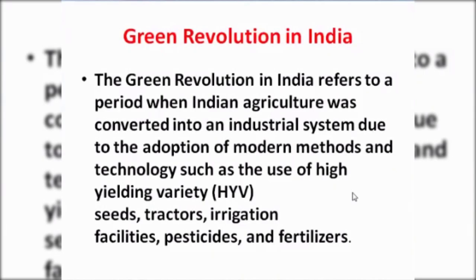Hello students, today we will talk about the green revolution. What is green revolution? When a large increase in crop production is achieved by using artificial fertilizers, pesticides, high yielding crop varieties, that is known as green revolution. So, when the crop production is increased by the use of artificial fertilizers, pesticides, irrigation, high yielding crops, this is known as green revolution.